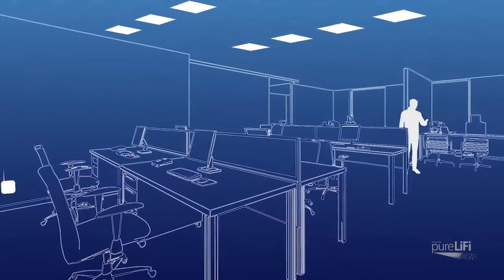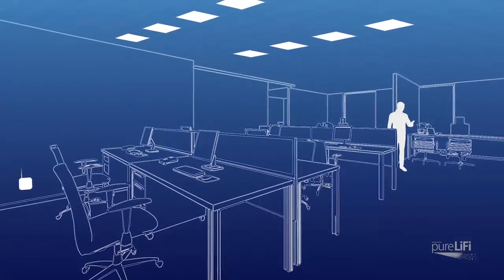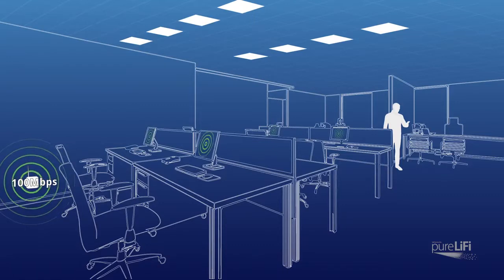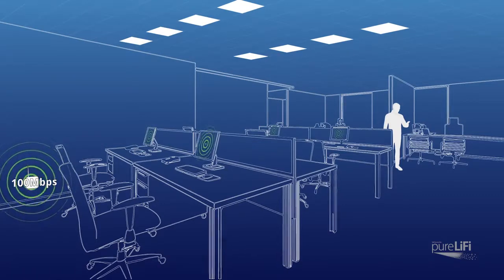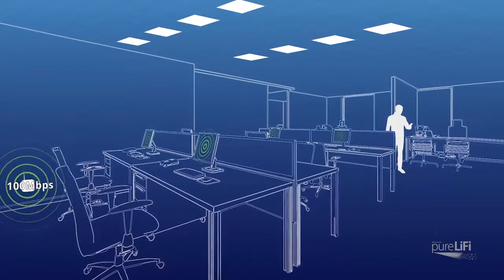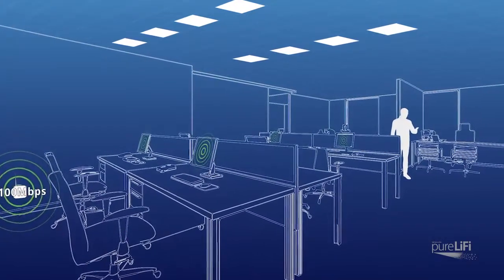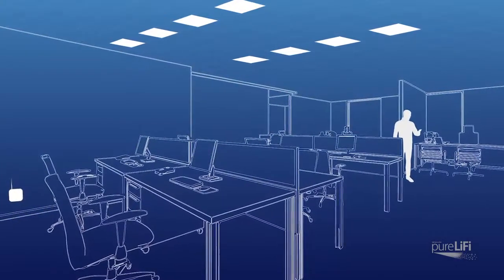Li-Fi offers greater density than many other radio frequency solutions. For example, if you have an average Wi-Fi router in your office that provides up to 100 megabits per second and 15 people are connected to that router, it means that you might only be able to access 4 megabits per second.